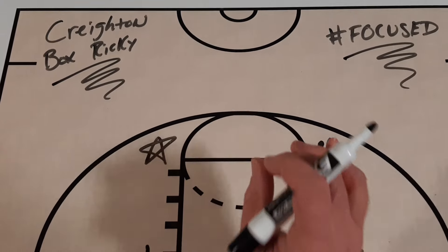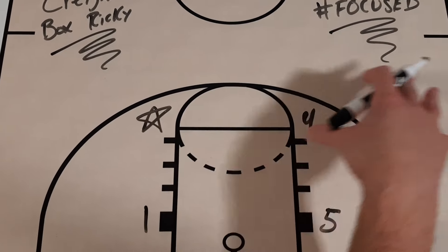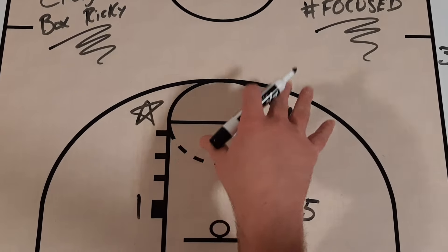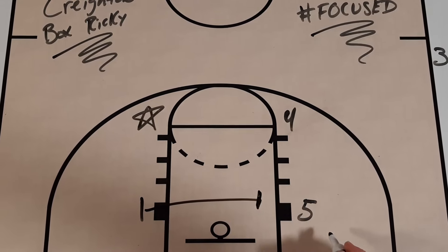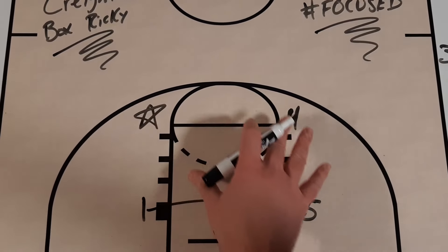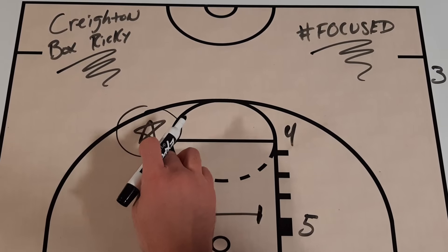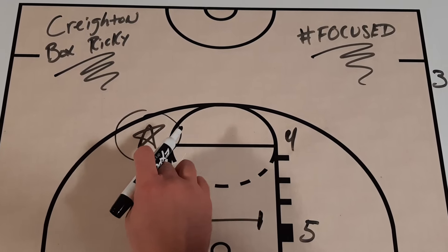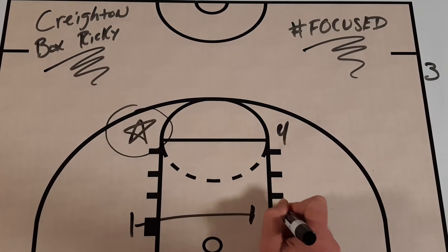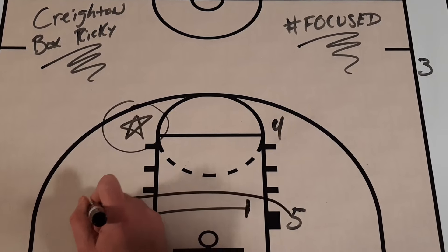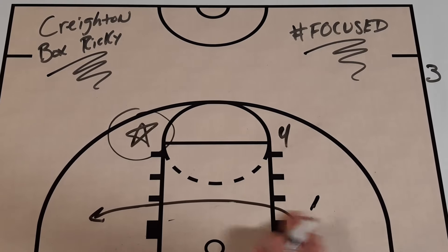It's a really simple set. You start in a box — a lot of teams like to use box actions in sideline out-of-bounds situations. We're going to get a screen across from our one player to our five. These numbers are pretty interchangeable, but our star shooter is in this particular spot. Five is going to come opposite, one is going to set the screen, and they're going to end up over here.